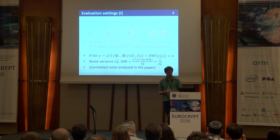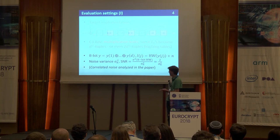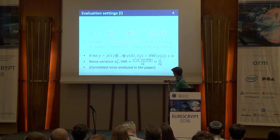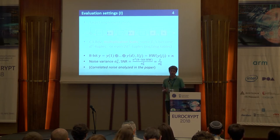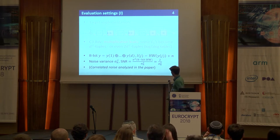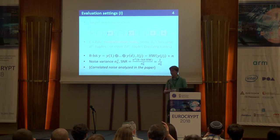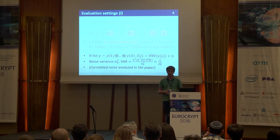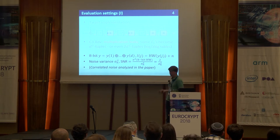For the rest, we use a standard setting: 8-bit values for the AES, Hamming weight leakage function with Gaussian noise with variance sigma^2. For simplicity we use the signal-to-noise ratio as a parameter — the variance of an 8-bit random value times the Hamming weight divided by the noise variance. All results discussed here assume all noise samples are independent, though in the paper we also discuss what happens with correlated noise.